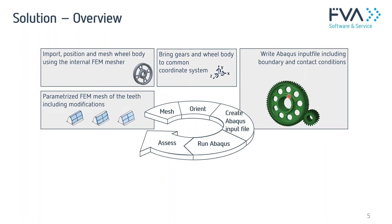We prescribe all boundary and contact conditions. This is a question of efficiency: if I can tell the FE solver which flanks will probably be in contact, this is more efficient than letting the solver check whether any surface might contact any other — that search algorithm is far more expensive. All optimization tricks are in use here.